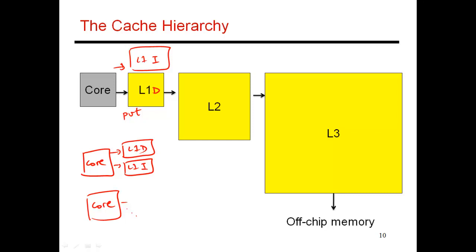And then the L2 could be private or shared. So it's possible that if you assume private L2, then core number one has its own private L2 cache. And then likewise, you could have another private L2 cache for core two and so on.